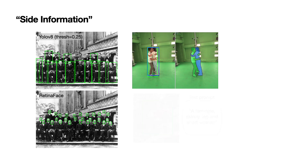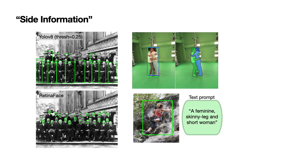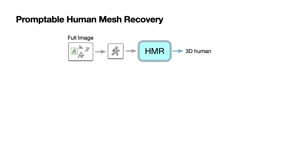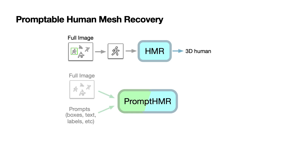Consider a case where it's harder to estimate the person's body shape from image alone. Having additional information from text input helps resolve some ambiguities. Based on these observations, we reformulate HMR as a promptable recovery problem. Specifically, given a full image and a set of prompts, PromptHMR aims to take full advantage of available information to robustly and coherently reconstruct humans in the 3D scene.